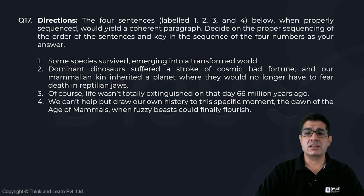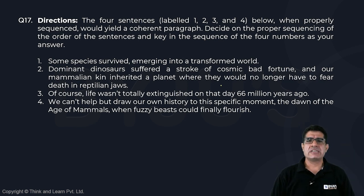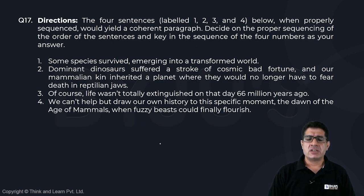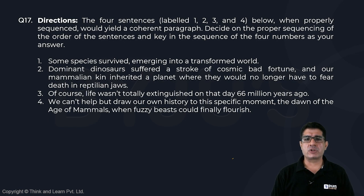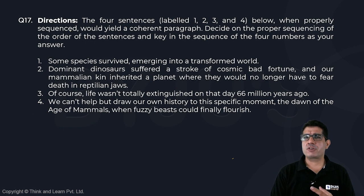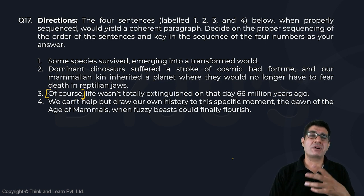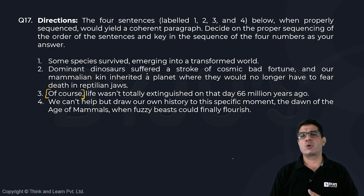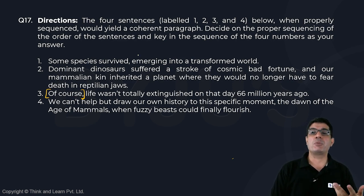Question number 17 is a typical Parajumble where we are given four sentences and we are supposed to discover the most appropriate way of arranging them. When I started working on this, I looked at a lot of different clues — word-based, idea-based — all of those helped. But those who have the tendency of looking for the opening sentence may struggle, because when you look closely, sentences one, two, and four cannot be put before it.